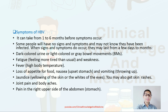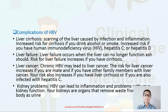Symptoms of hepatitis B can take one to six months to appear; some people may have no symptoms. When they do occur, symptoms may include dark-colored urine, gray-colored bowel movements, fatigue, fever, loss of appetite, nausea, vomiting, jaundice, skin rashes, joint pain, body aches, and pain in the upper right side of the abdomen. Complications include liver cirrhosis, liver failure, liver cancer, and kidney problems.